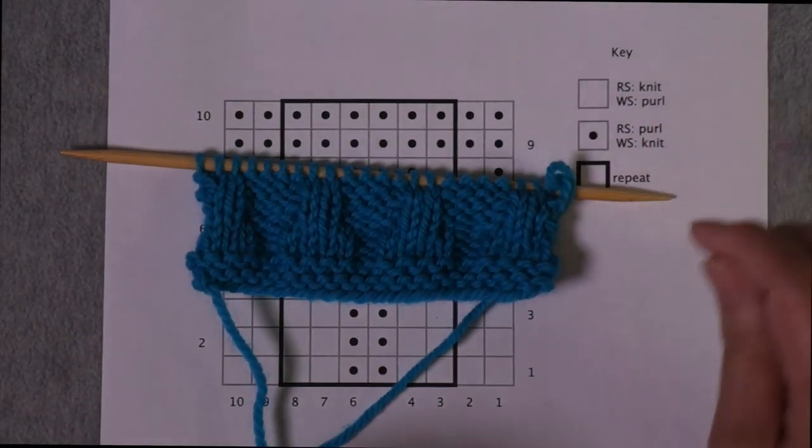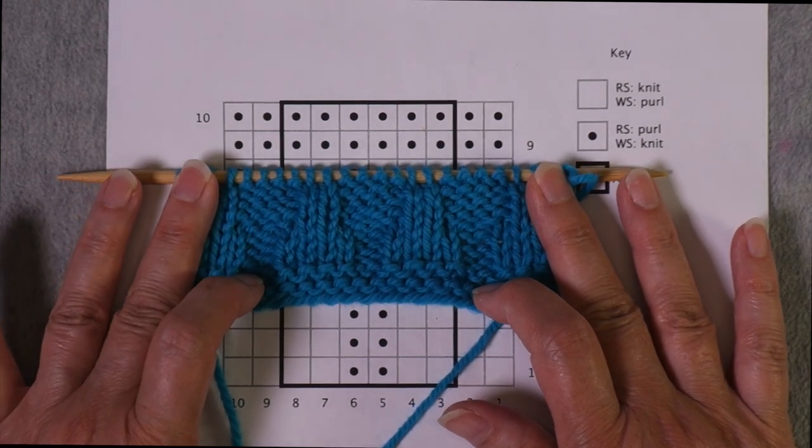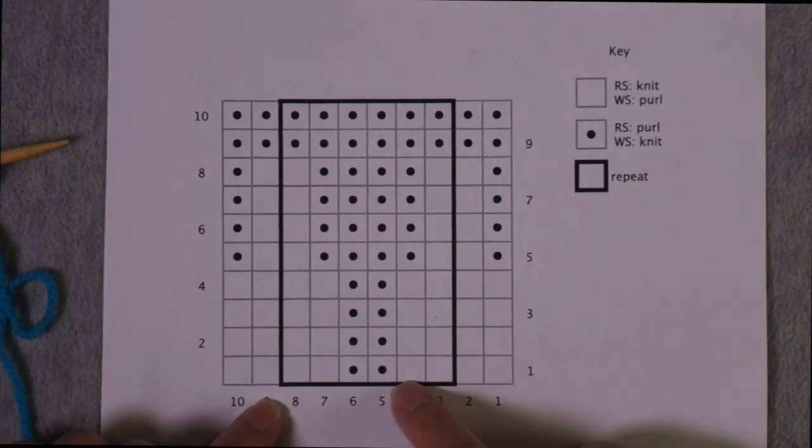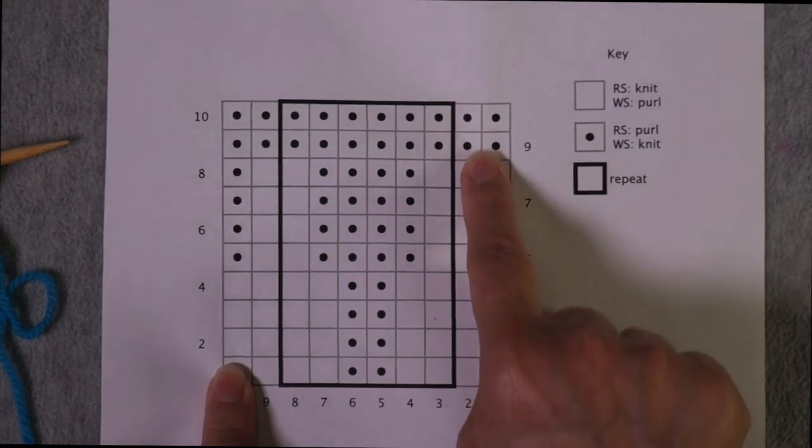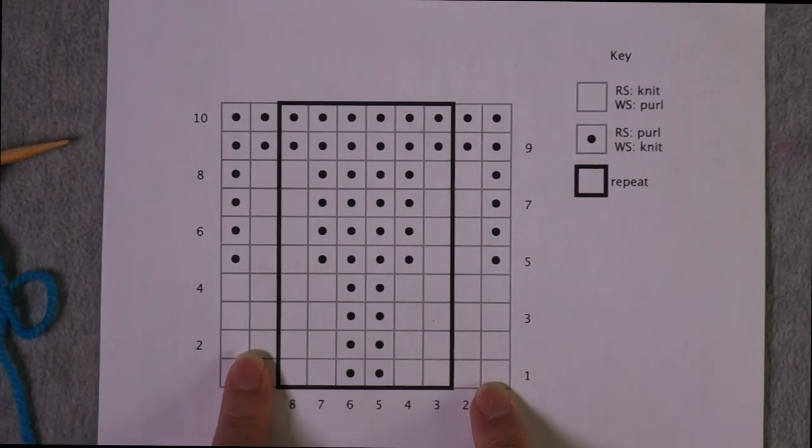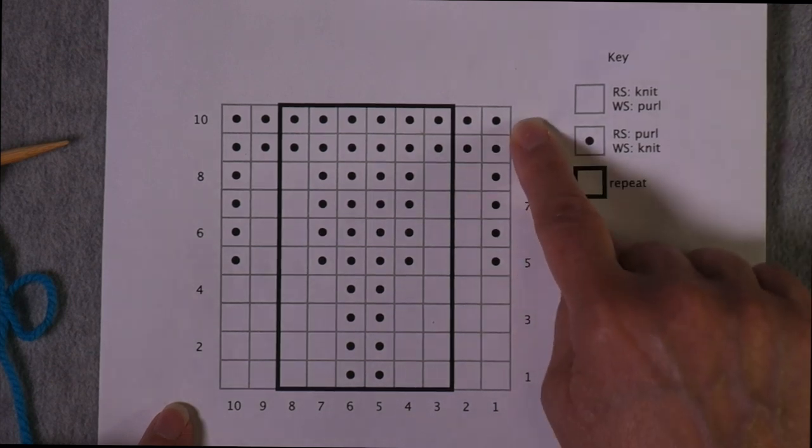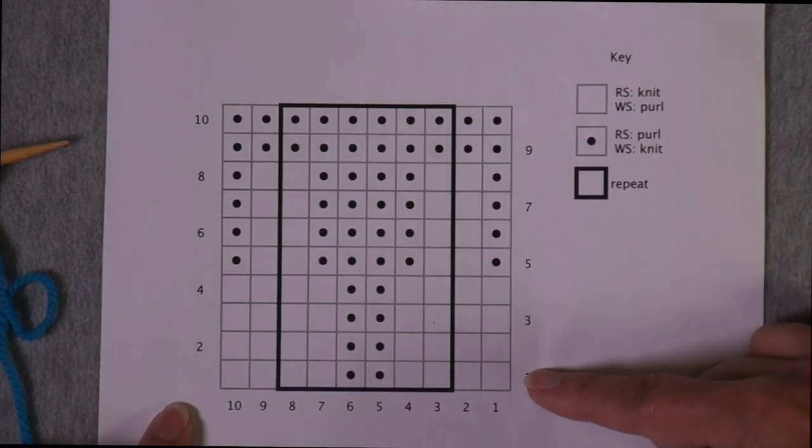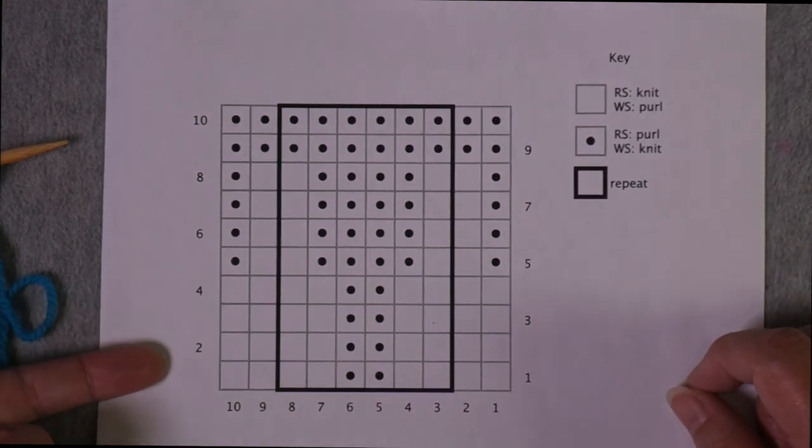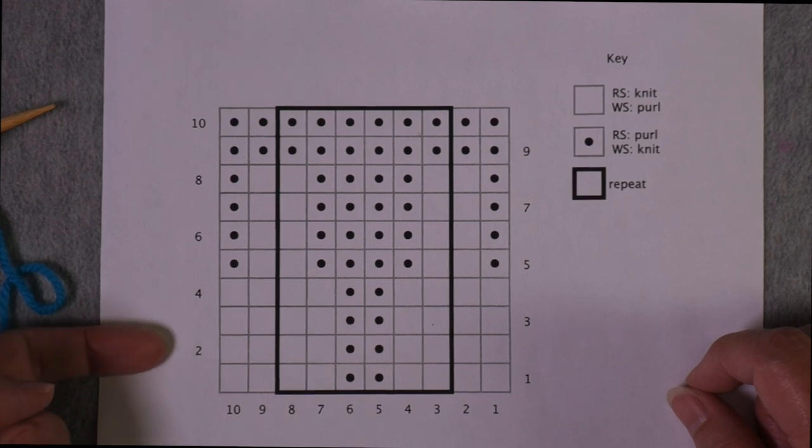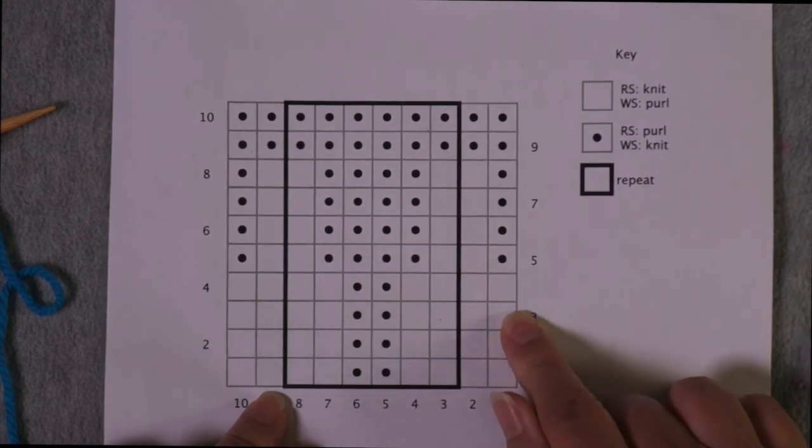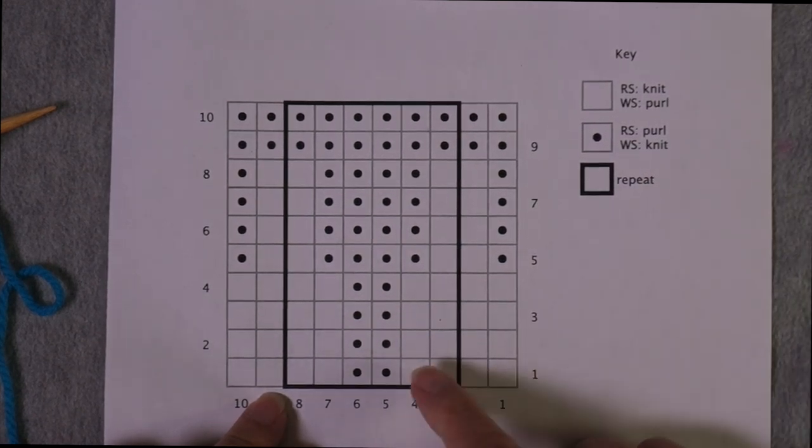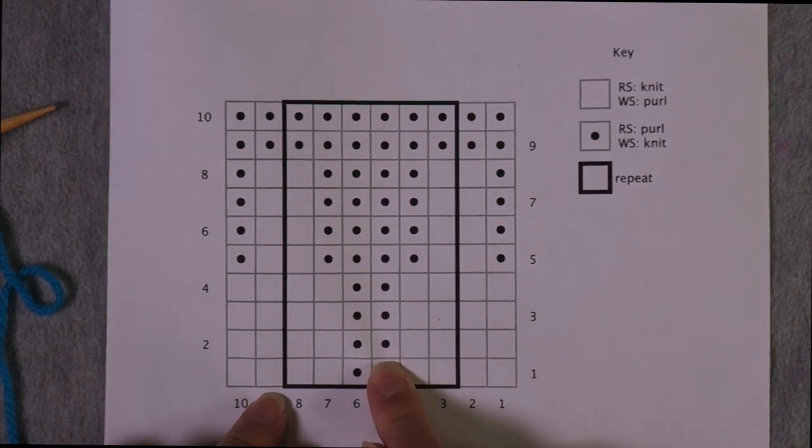This is a chart that creates a texture pattern that looks like this. What we have here is a border, which indicates the repeat. And then we have stitches that come before that border and stitches that come after that border. Then you can see that we have row numbers on the right edge for the odd rows. Those are the right side rows. And then we have the even rows, our wrong side rows that are worked in that direction. The blank boxes are knit on the right side and purled on the wrong side. But the dots represent purls on the right side and knits on the wrong side.